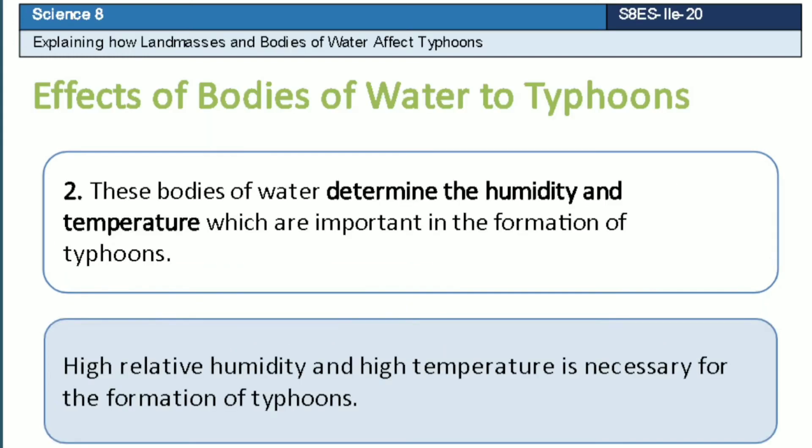Second, these bodies of water determine the humidity and temperature, which are important in the formation of typhoons. High relative humidity and high temperature are necessary in the formation of typhoons.